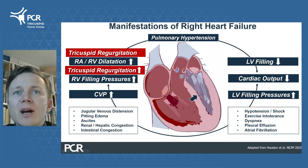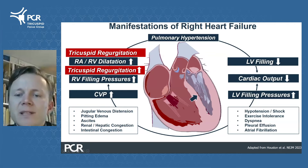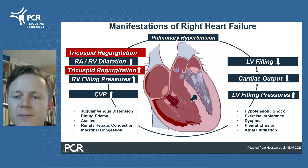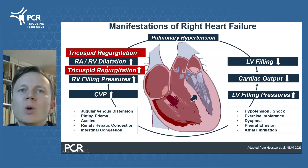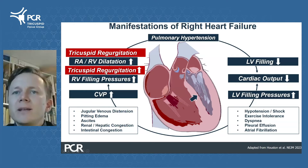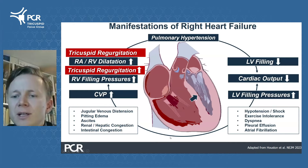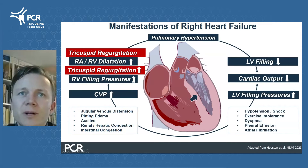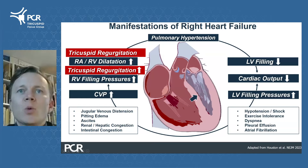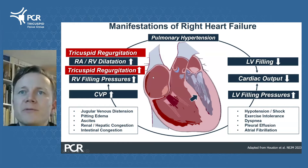Tricuspid regurgitation plays a pivotal role in this dynamic, either as a cause or consequence of right heart failure. Once initiated, these processes perpetuate each other, contributing to the progression of tricuspid regurgitation, which in turn fuels the progression of right heart failure.